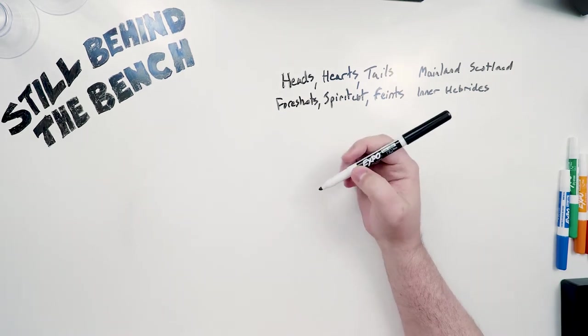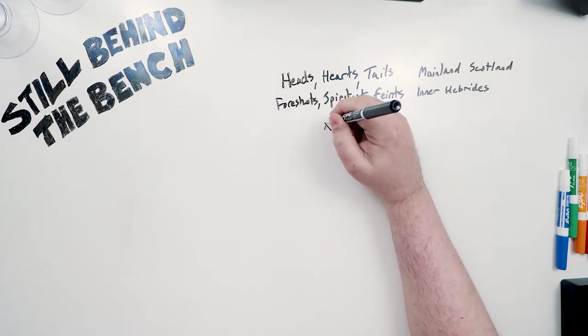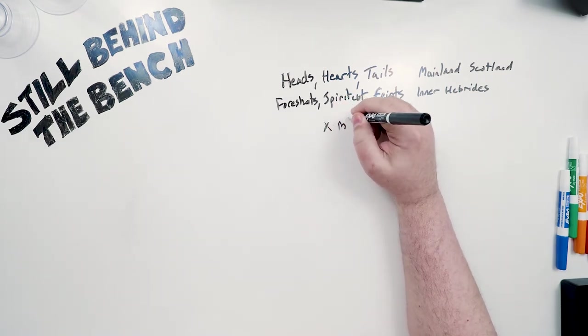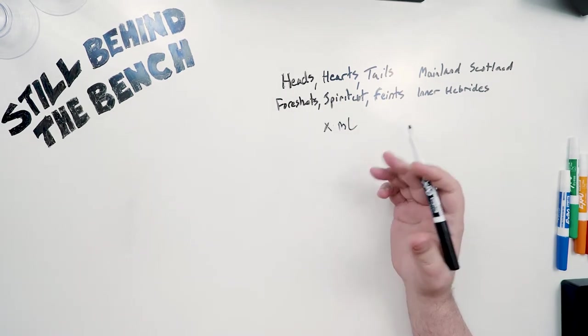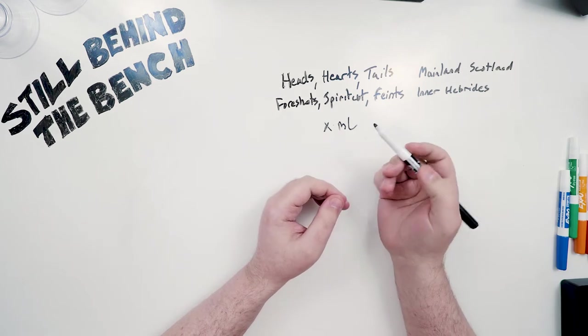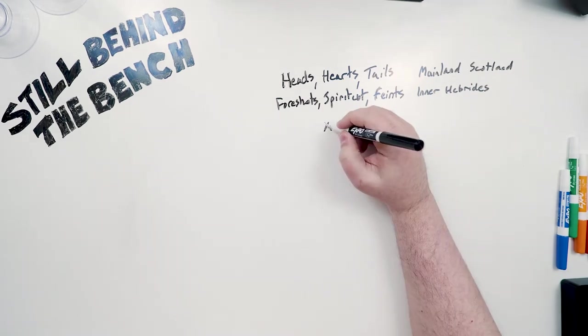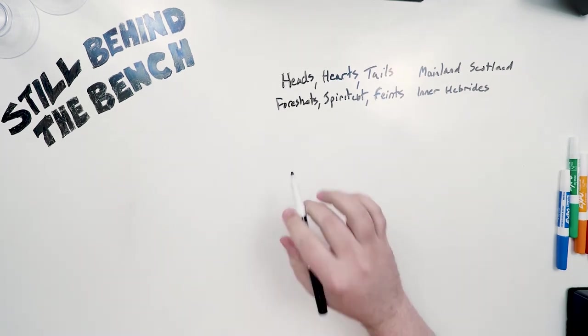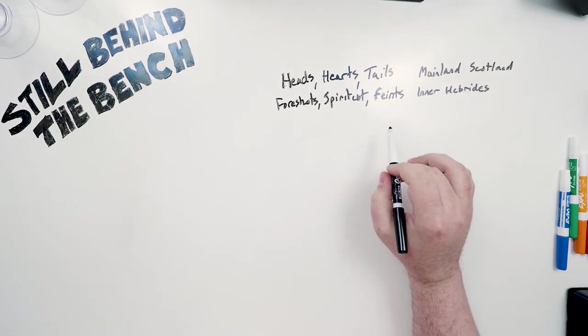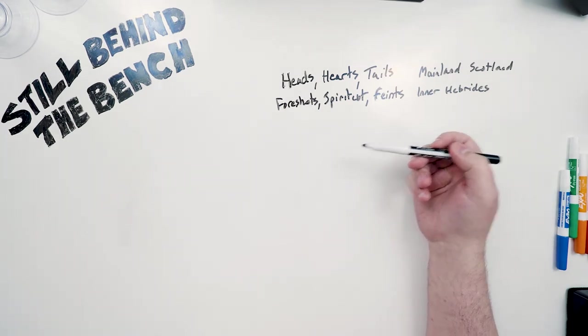So the common myth is that methanol shows up in the heads when distilling. You collect the first x milliliters of foreshots or heads and you throw it out and you've gotten rid of the methanol. I say that's a myth because most people who are talking about this are typically talking about using a pot still and it turns out that when pot stilling methanol actually comes out in the tails and I'll explain why. Or I should say the majority of the methanol comes out in the tails when you're pot stilling but the rest of it does actually get smeared across the heads and the hearts.